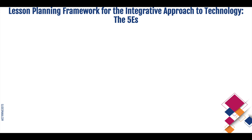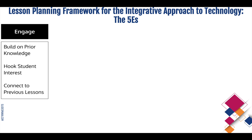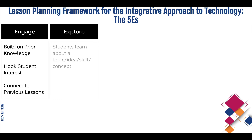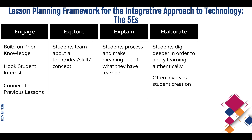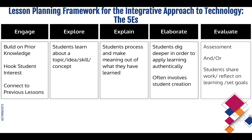Let's look at the five E's lesson plan. The first E stands for engage — in this stage you can build on students' prior knowledge, hook their interest, or make connections to previous lessons. In the explore part of the sequence, students will be learning about a new topic, skill, idea, or concept. In the explain phase, students will begin to process and make meaning out of what they've learned. In the elaborate stage, students dig deeper to apply their learning in authentic ways, and this stage often involves students creating. And in the evaluate stage, you could give students some form of assessment, have students share their work with their peers, reflect on what they did, and set goals for the future.